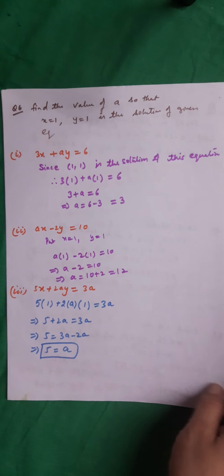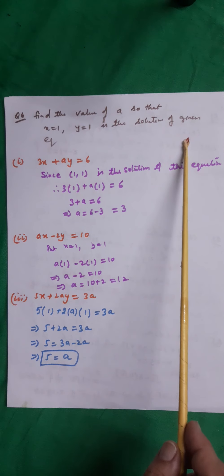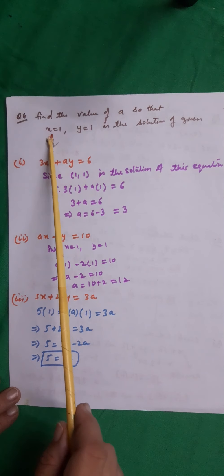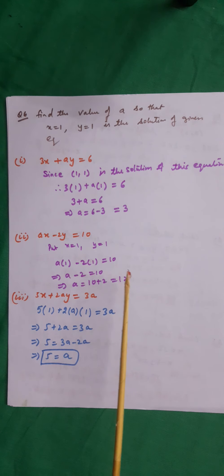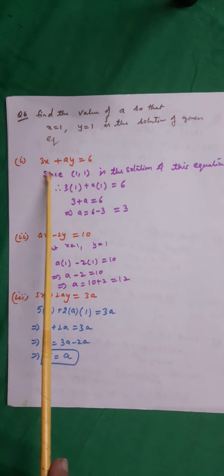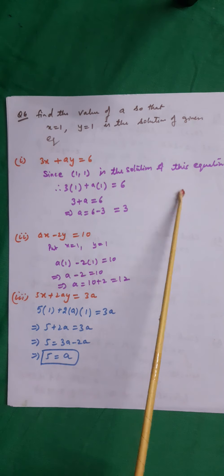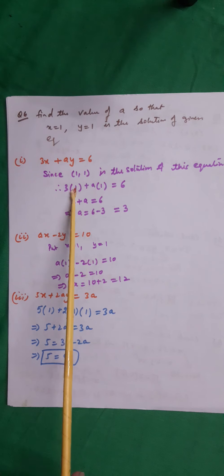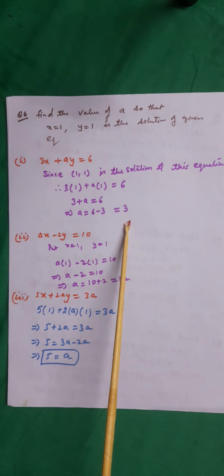Find the value of a so that x equal to 1 and y equal to 1 is the solution of the given equation. If x=1 and y=1 is the solution, it must satisfy the equation. So in place of x and y we put 1 and 1: 3 into 1 plus a into 1 equals 6, which gives 3 plus a equals 6, so a equals 3.